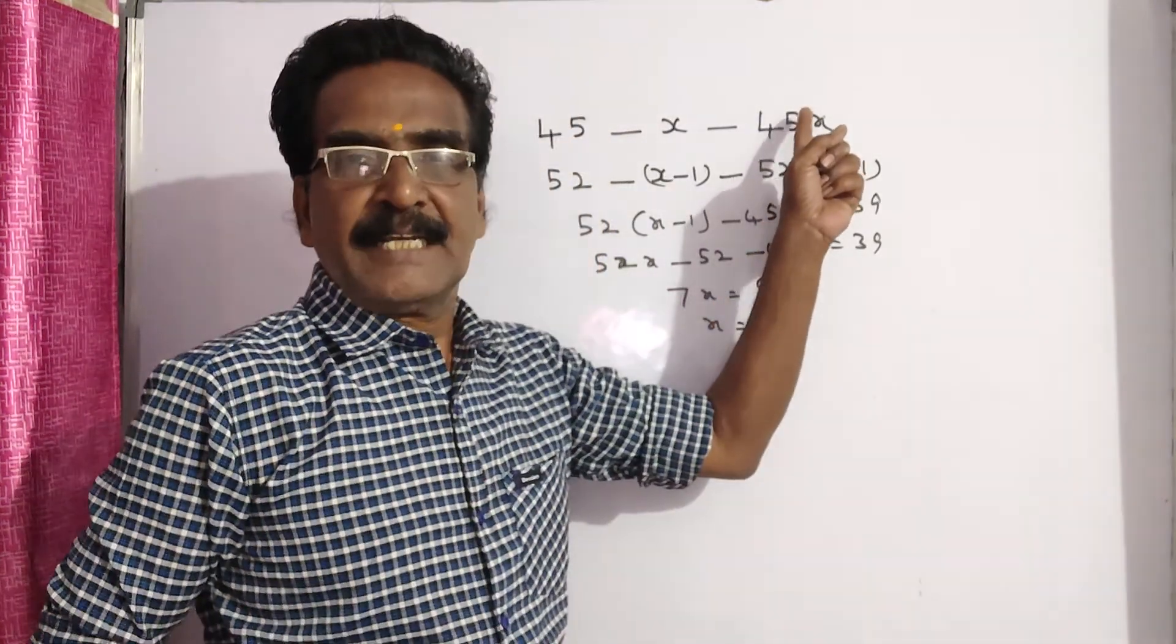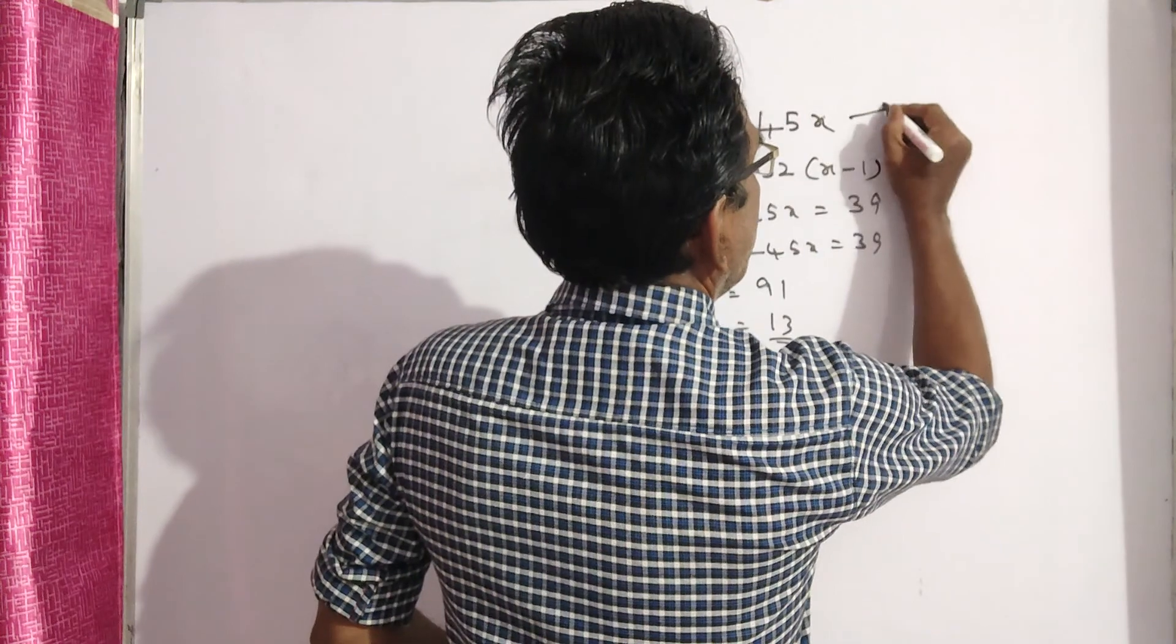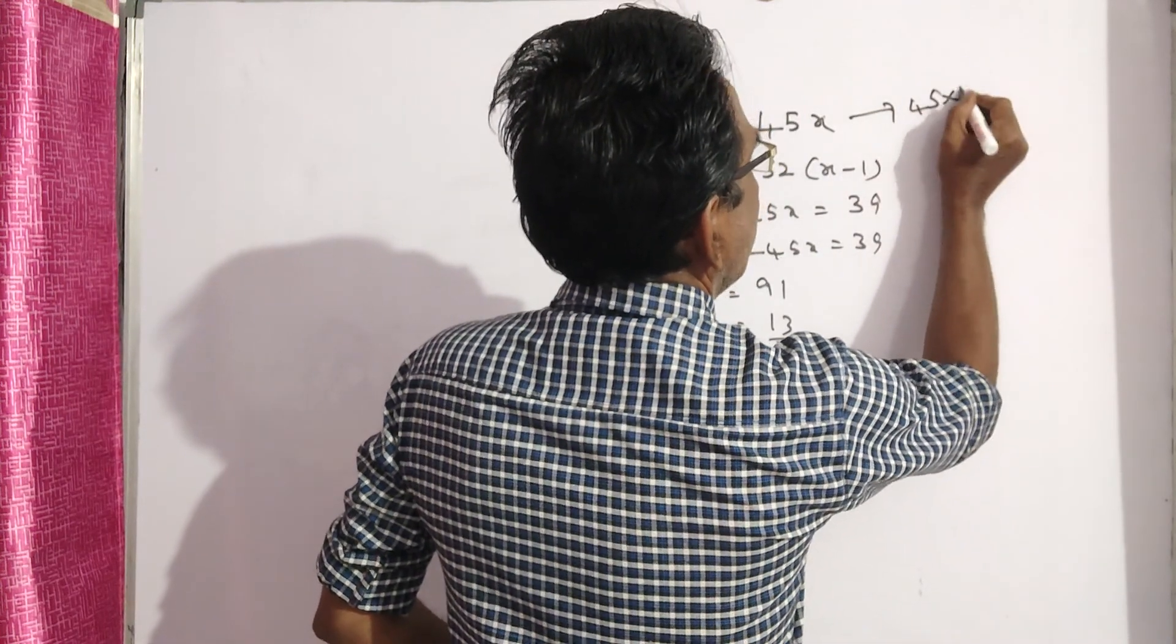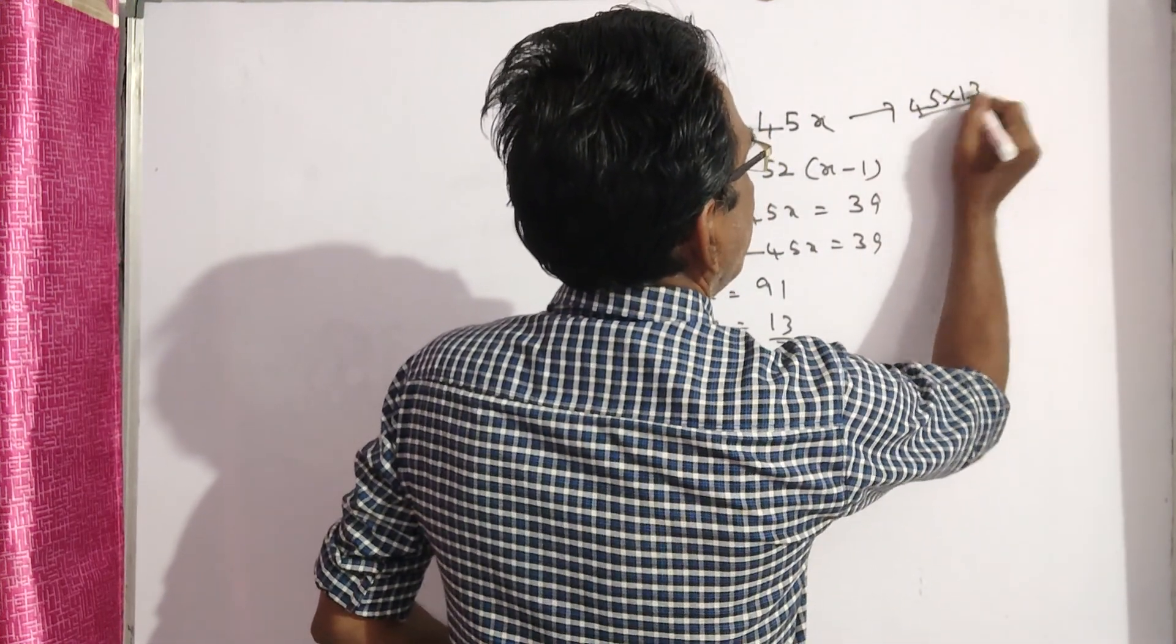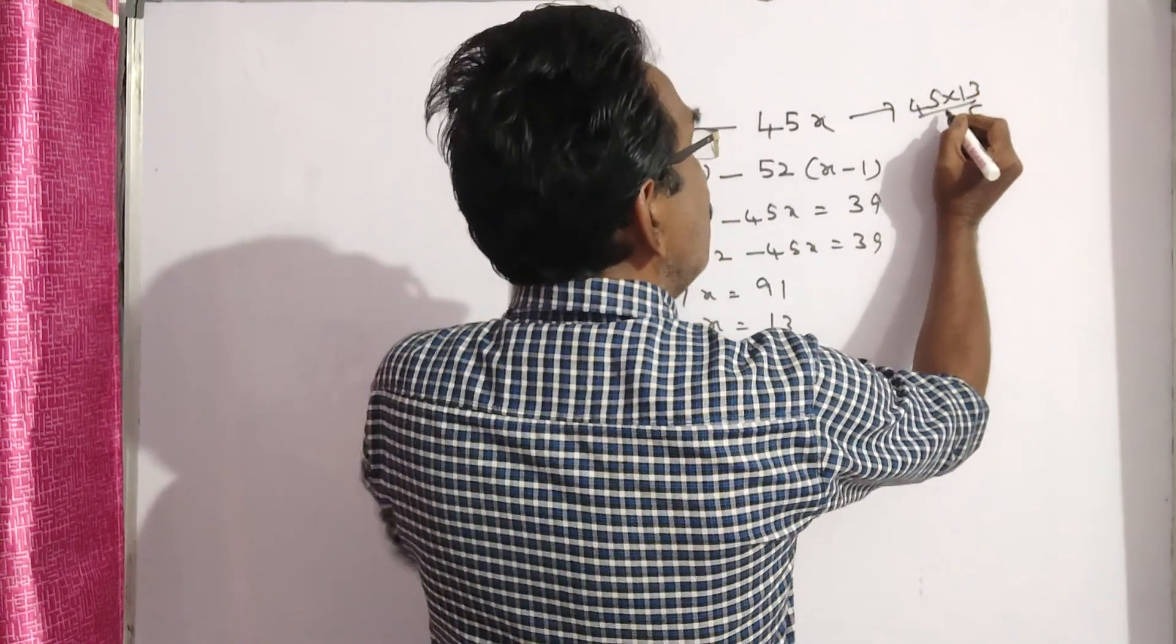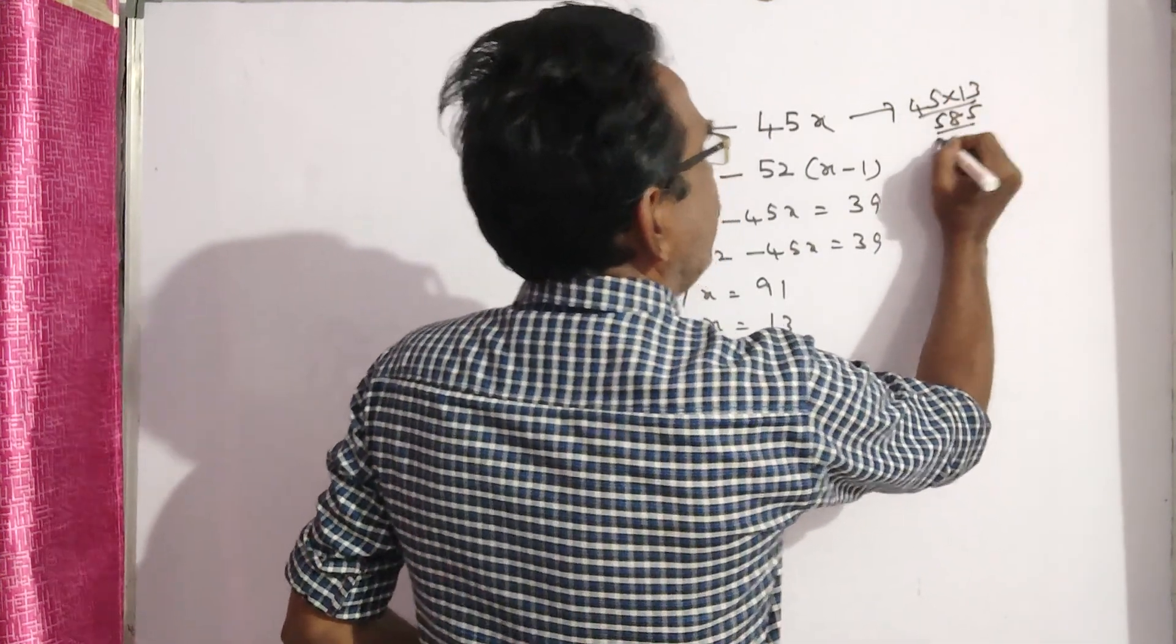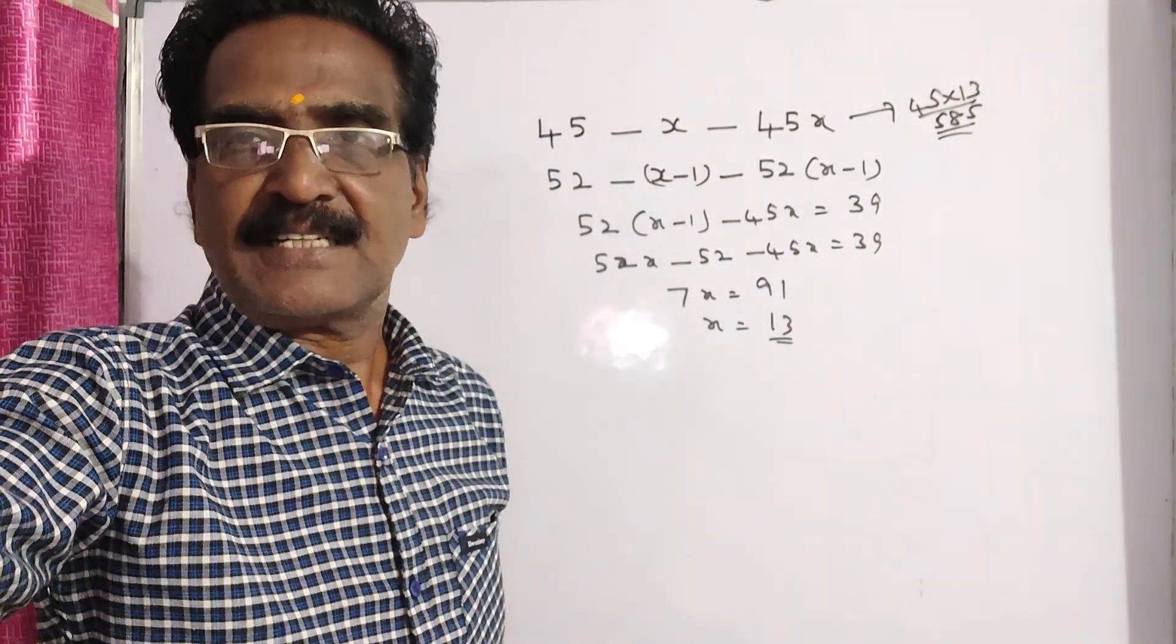So the initial expenditure was 45 into 13. 45 times 13 equals 585 rupees is your answer friends. Okay friends, thank you.